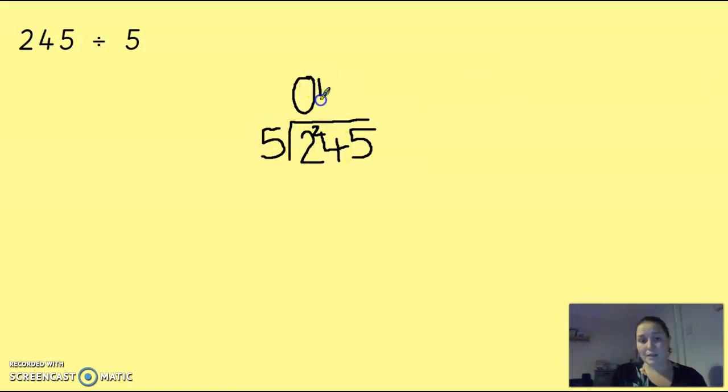5 into 24. It goes 4 times, because 4 times 5 is 20. I wanted 24, so I've got 4 left over, 4 remainder. How many 5s are there in 45? I'm going to do my 5 times table. I know that there are 9. Nice and simple little recap there for you.